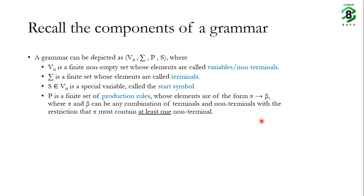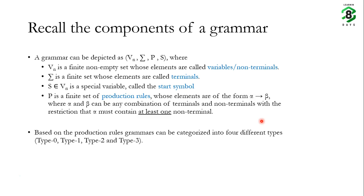S is a special variable called the start symbol and it is part of Vn. P is a finite set of production rules whose elements are of the form alpha arrow beta, where alpha and beta can be any combination of terminals and non-terminals, with the restriction that alpha must contain at least one non-terminal. Based on the production rules, grammars can be categorized into four different types.